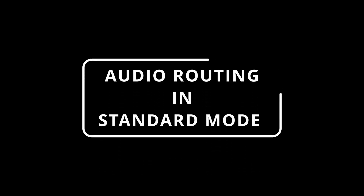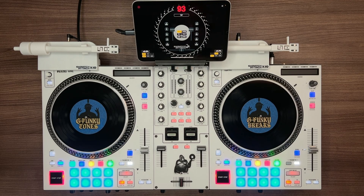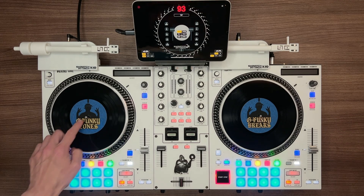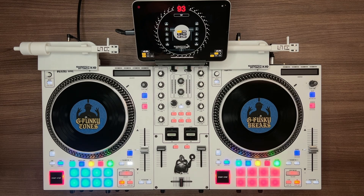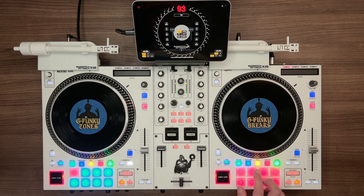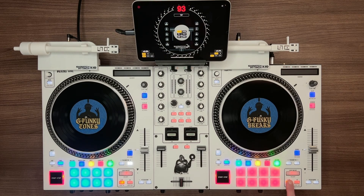Audio routing in Standard mode: by default, the looper samples from the vinyl deck on the same channel. If sample trigger mode is activated on the opposite deck, the looper will automatically switch to sample from that deck's sampler. To return to the vinyl input, press loop in on the sampler deck. To switch back to the sampler input, press loop out.